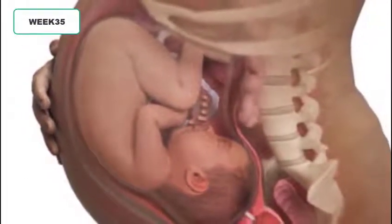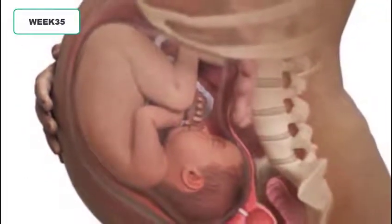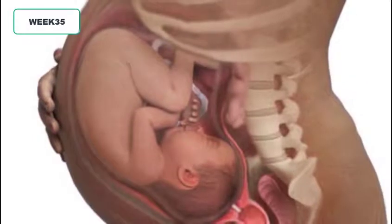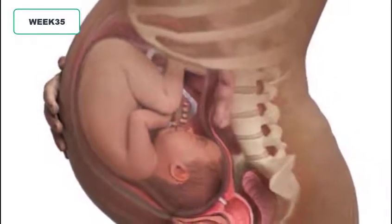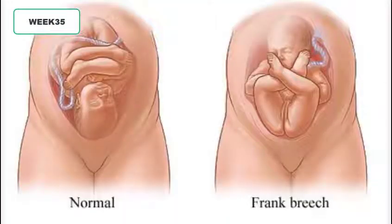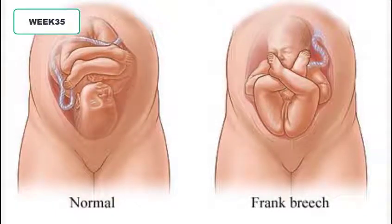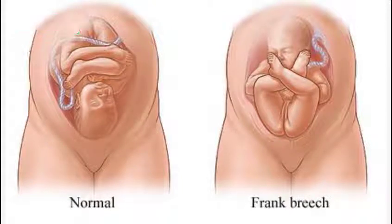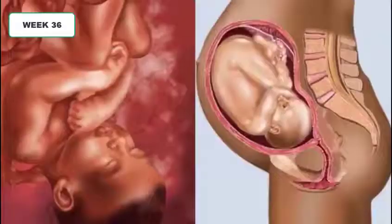At week 35 the baby is now around 2.5 kg. The head is getting more engaged in the pelvis, taking a good position for birth — head down, legs up, the baby's back facing your abdominal wall and the baby's front facing your back. This is the best position for birth without complications. If the baby is still in a breech or transverse position now, the chances of the position being reversed afterward are very little.